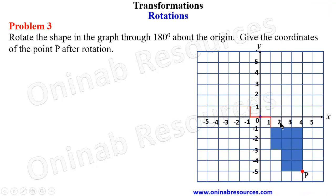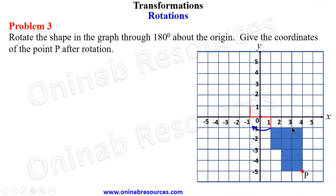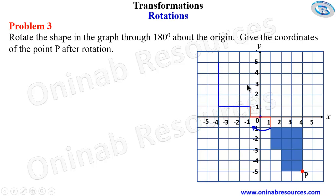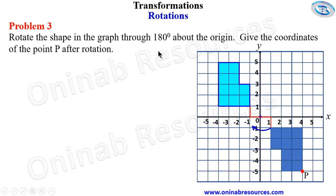For this video we rotate clockwise. If the whole shape turns this way, the top becomes the base. The top is three units, so from here we have three units. Then one, two, three, four — four units up. We complete the diagram to get our image, with two units here and one unit here. We join the rest to form the image after 180-degree rotation about the origin.